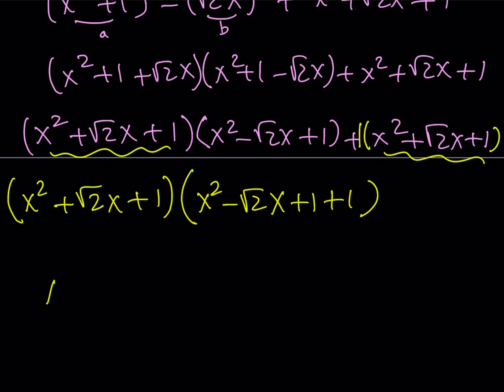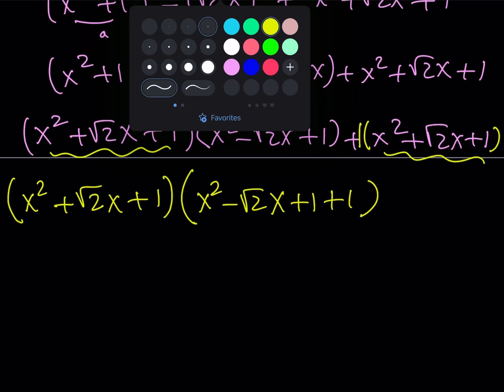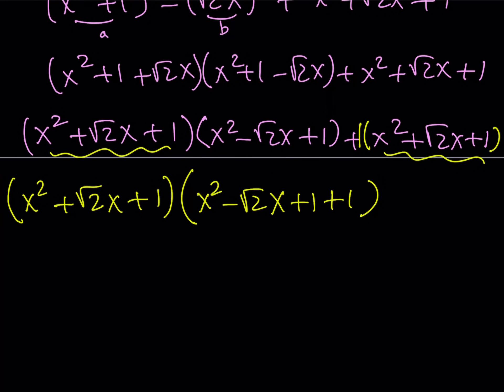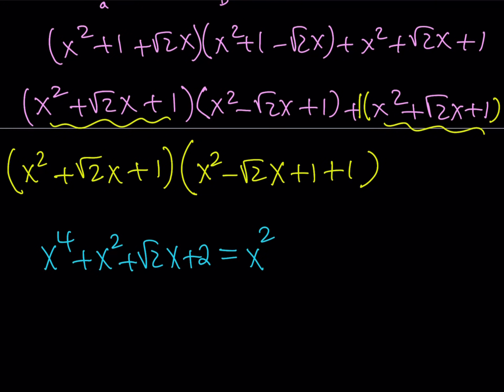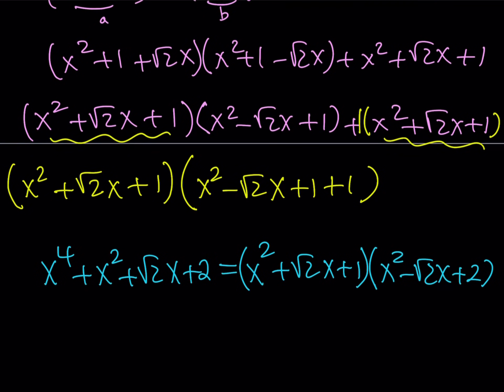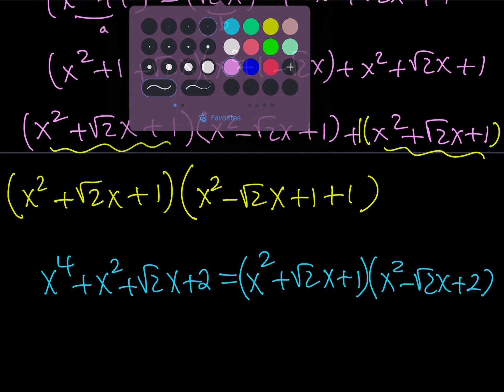And when I write it in the final form, it is going to be, and remember our original expression. Let's go ahead and write it down. And then, we're going to write it all the way as a factored form. And it's going to look like this. My original expression was x to the fourth power plus x squared plus root 2x plus 2. And now, we know that it's factorable into x squared plus root 2x plus 1 multiplied by x squared minus root 2x plus 2. And this brings us to the end of this video.